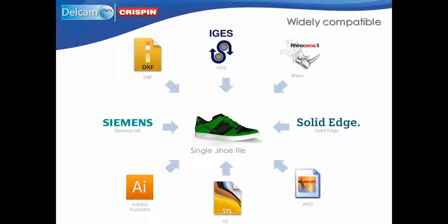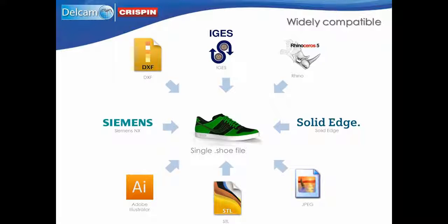If you don't purchase all the software at the beginning, the .shoe file you create will still contain the information you need downstream, should you choose to purchase additional software later. Each package can also be used independently and works well with non-Delcam Crispin software. You can import and export all typical formats such as STL and IGES, as well as Adobe Illustrator, Autodesk DXF and Rhino 2. Unlike other CAD software which produces files made up of millions of small facets, Delcam Crispin Shoemaker creates full solid models using the industry standard parasolid kernel, making it easy to transfer 3D models into and out of mainstream CAD systems such as SolidWorks, SolidEdge, and Siemens NX.